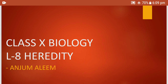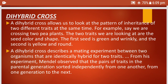Today I am going to discuss with you what is a dihybrid cross with an example. A dihybrid cross allows us to look at the pattern of inheritance of two different traits at the same time. In monohybrid cross, we took only tall and short or yellow or green seeds. But in dihybrid, we consider two traits at the same time. For example, we are crossing two pea plants — the two traits are seed color and shape. The first seed is green and wrinkled and the second is yellow and round. Here, yellow and round are actually dominant.